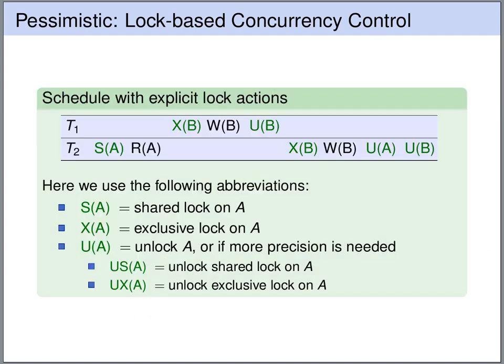On this slide you see an example of a schedule with explicit lock and unlock actions. We write S for obtaining a shared lock on object A, X to obtain an exclusive lock on object A, and U to unlock object A. Sometimes it's necessary to be more precise because a transaction might hold both a shared and an exclusive lock on the same object, and we may want to unlock only one of them. Usually it suffices to simply write U of A.